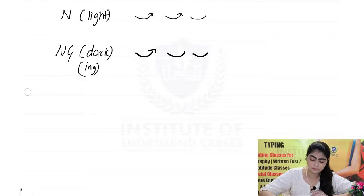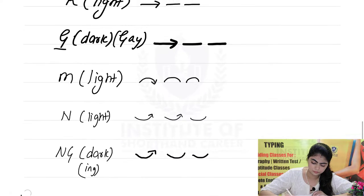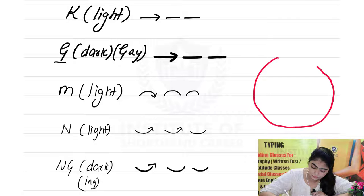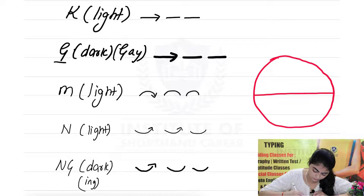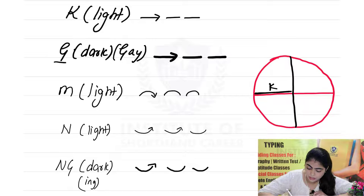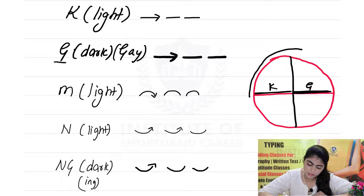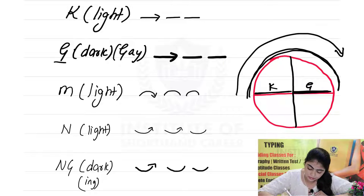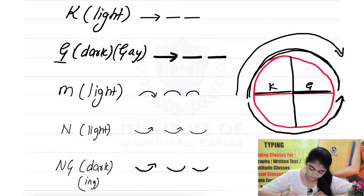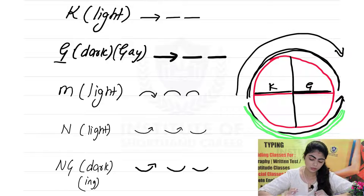Now I'll explain horizontal strokes through a diagram. Make a circle. This part is K — the light one — and similarly the darker one is G. Next, M is the upper hemisphere part, with direction going this way. N is the downward part, and NG is the same direction as N but darker. I hope this is clear.